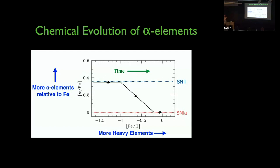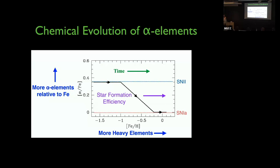In early times we're dominated by Type II supernovae — high alpha elements. Over time metallicity increases, and once a billion years has passed, Type Ia's turn on and alpha goes down. That's the schematic. One thing we find is that this can get shifted left or right: a very high star formation rate early on gets you to high metallicity before the Ia's turn on; a very low star formation rate means you're very metal-poor before you hit the alpha knee.